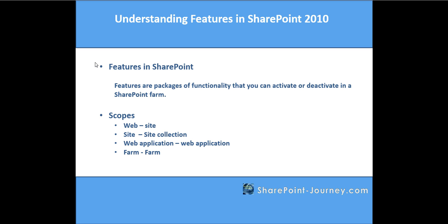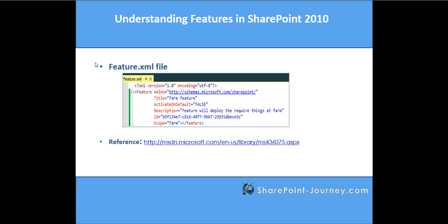For example, if you develop any artifact at the highest scope — farm scope — that will have an impact on the below scopes as well, like web application, site collection, and site. Next is the feature.xml file, which describes exactly what the feature is. It contains a title, description, and a unique ID which will identify the feature, and defines the scope of that feature.